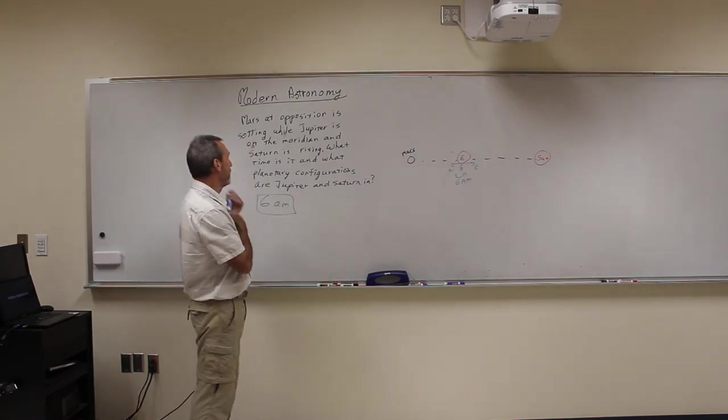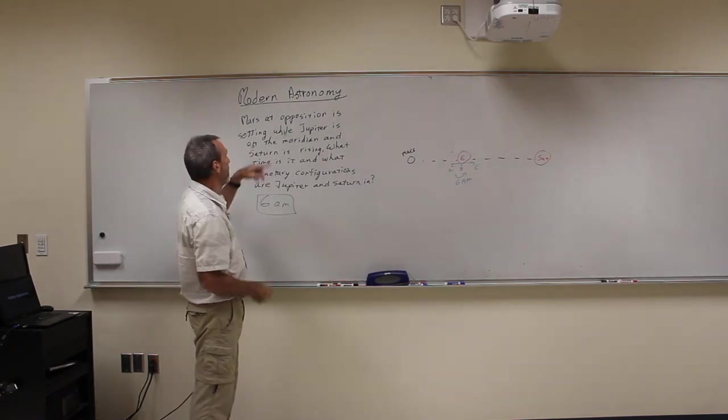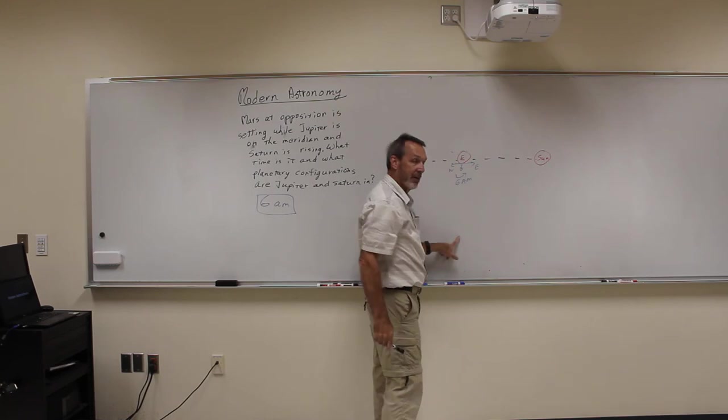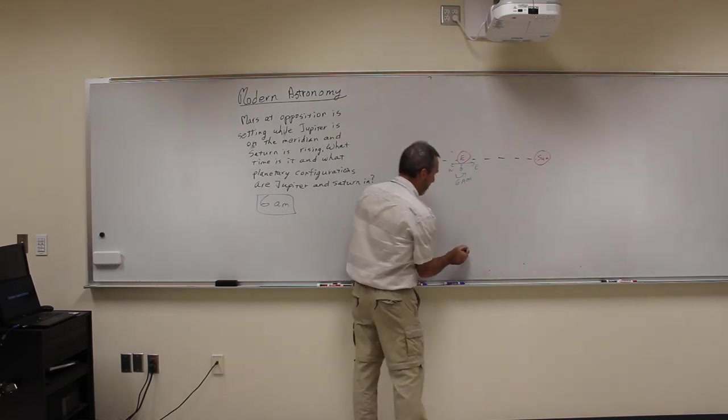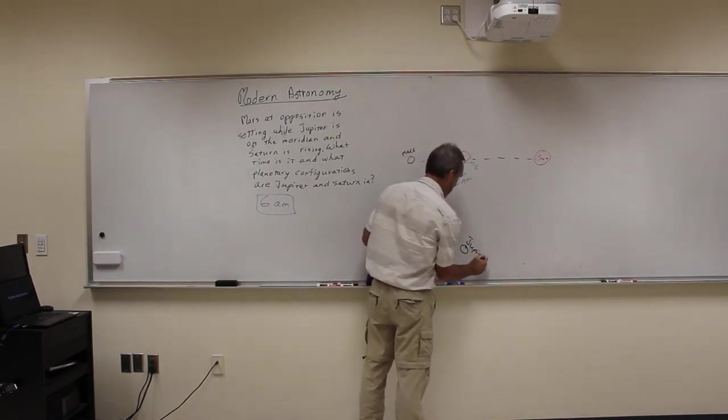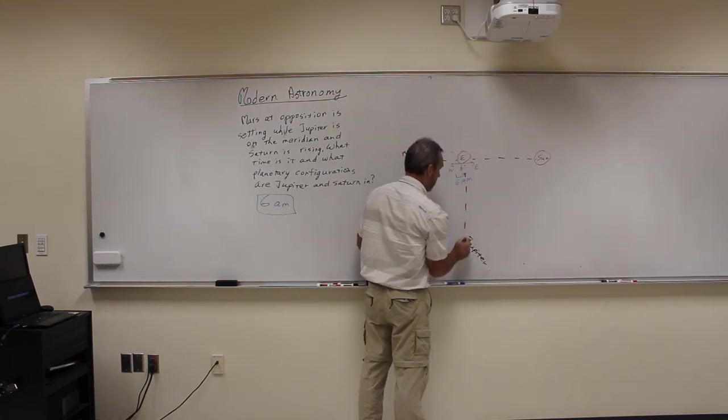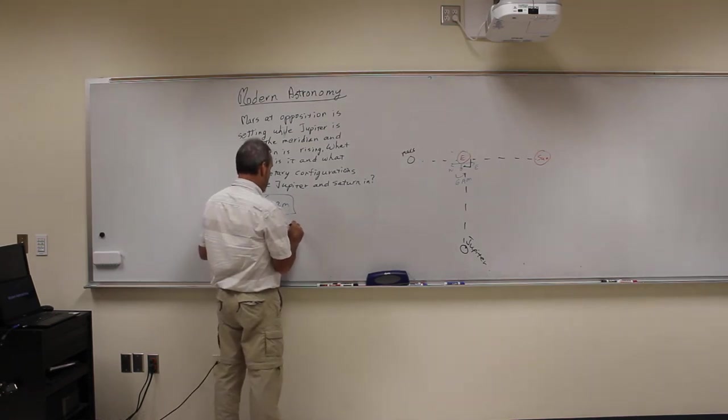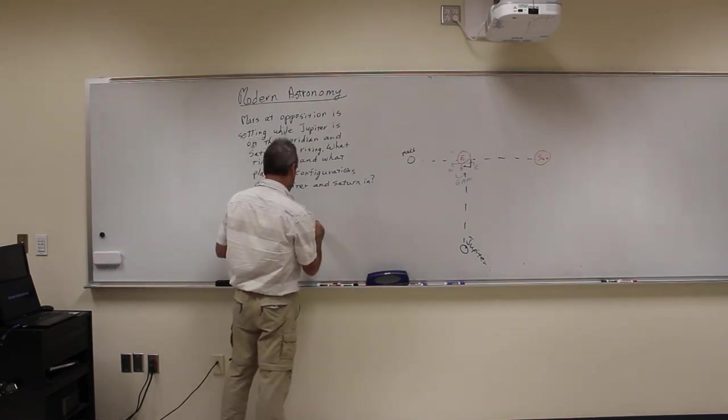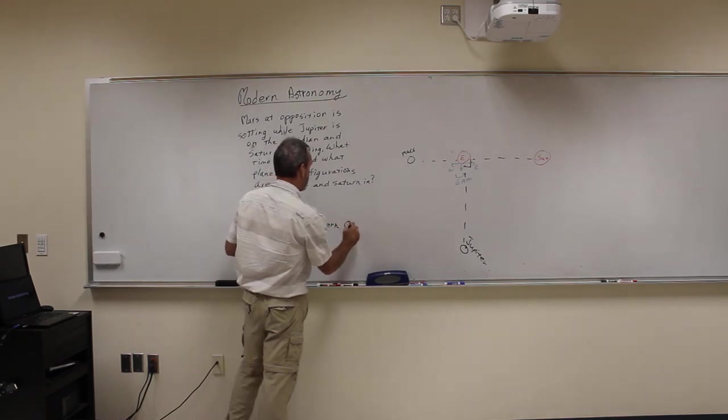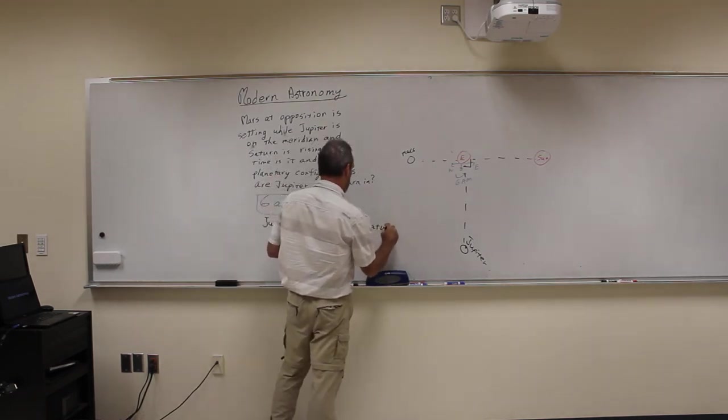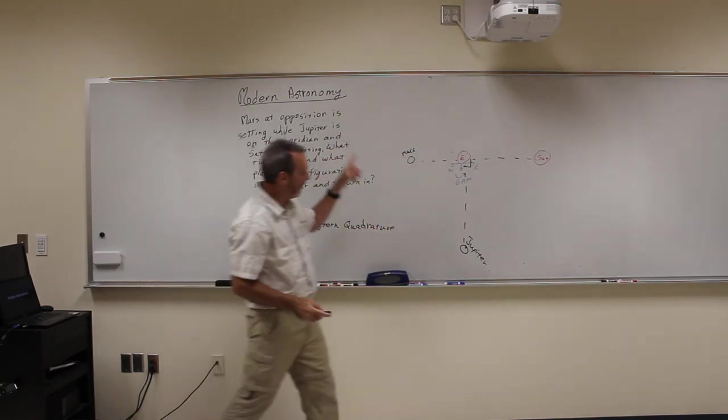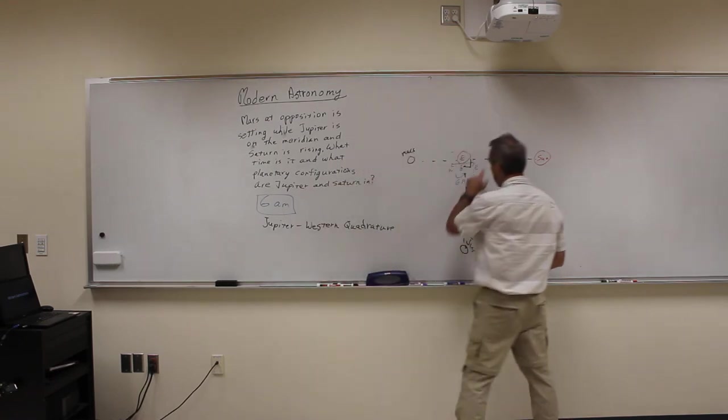Now I just got to figure out where to put Jupiter and Saturn. Well, the meridian, remember, is that imaginary line that goes from north to south straight over your head. So that's got to be straight over Herb's head, so down here is going to be Jupiter. Remember, that makes a 90 degree angle, so Jupiter is in western quadrature. Remember, I just go back to that chart that we just had, and we say, Jupiter down here, so that's a 90 degree angle, is in western quadrature.